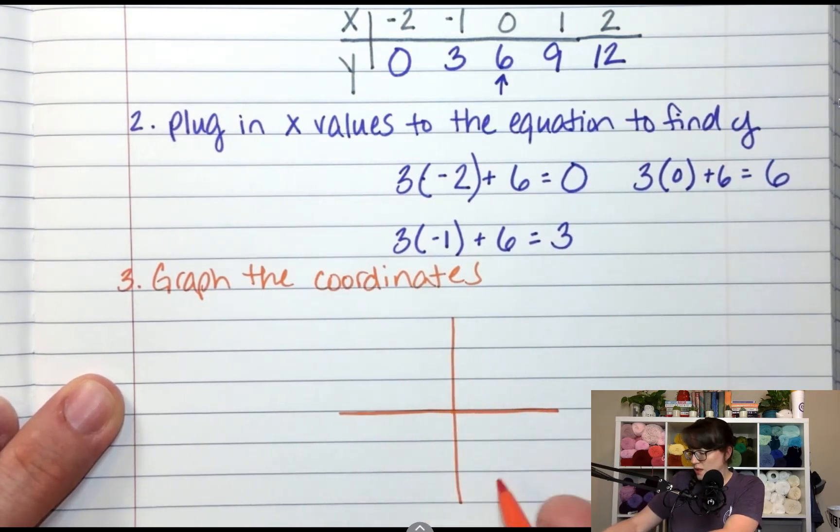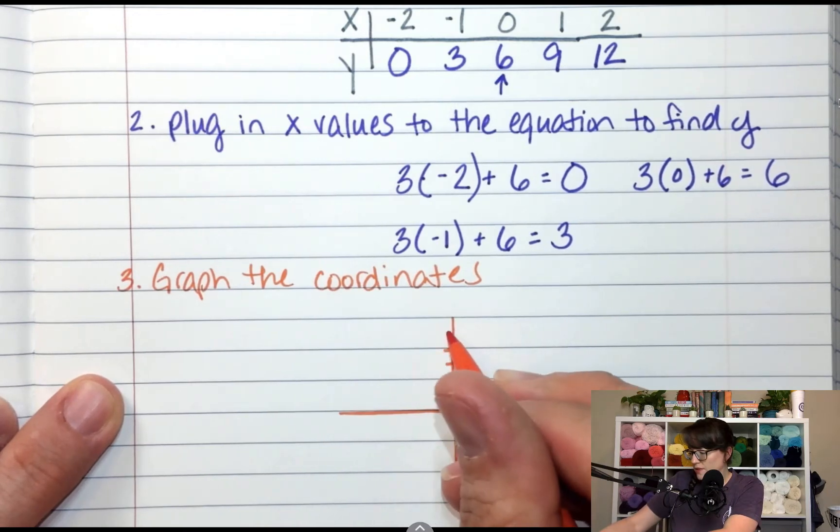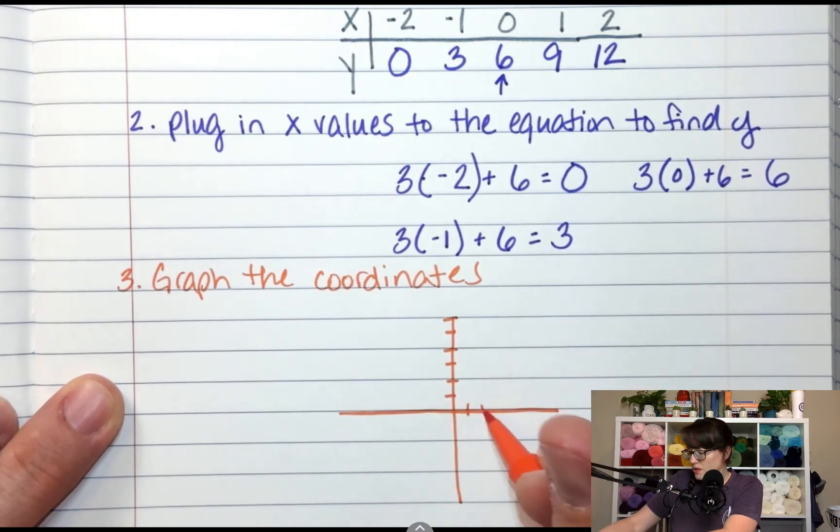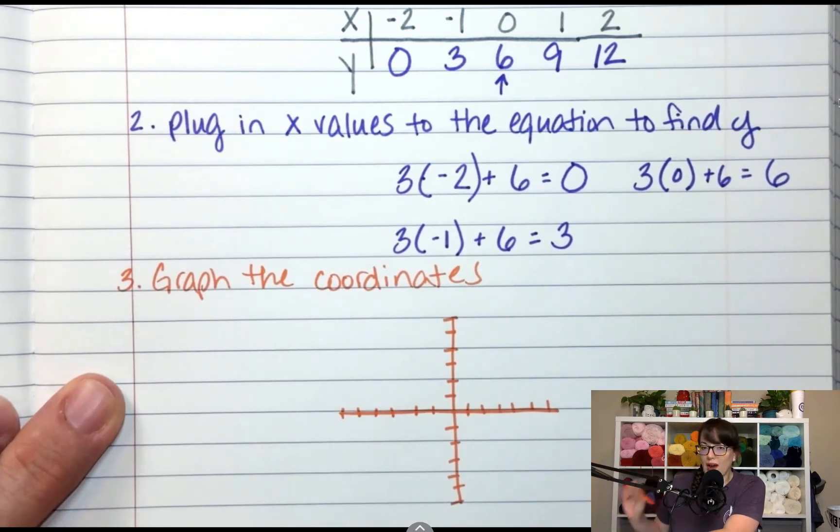So we're not going to go to 12. I'm going to go 1, 2, 3, 4, 5, 6 for each axis. And we don't need negatives. Okay.